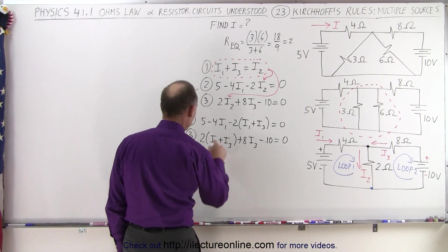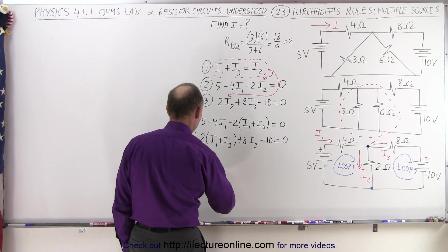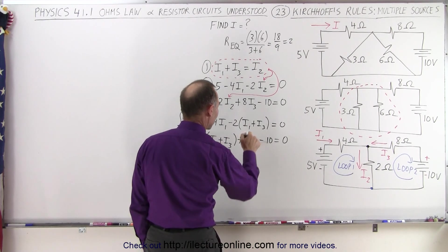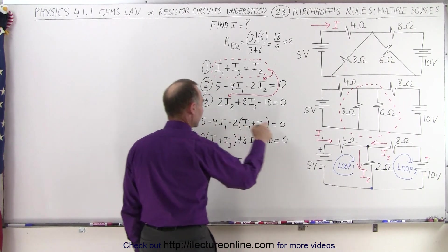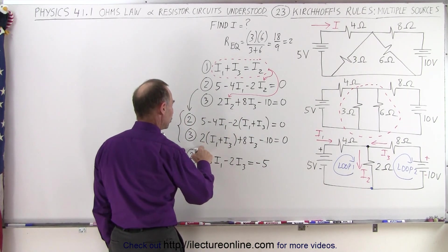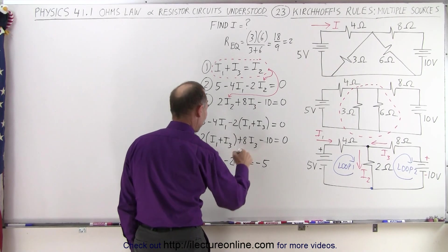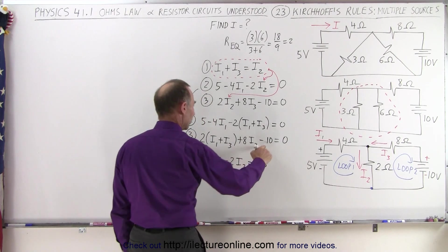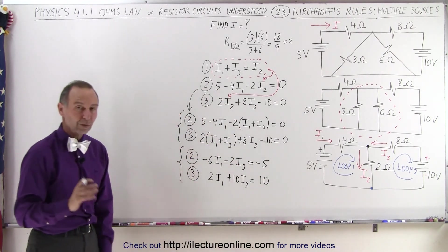So simplifying this a little bit more, equation number two becomes minus four I1 minus two I1 is minus six I1. We have minus two times I3, that's minus two I3 is equal to, bring the five across, the other side becomes minus five. And the third equation, we have two I1, and two times I3 plus eight times I3, that's plus 10 times I3 is equal to, when we bring the minus 10 across, we get a positive 10. So here are the two equations in a much more simplified form.